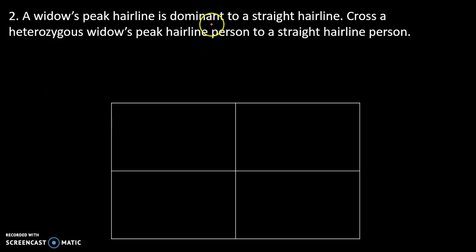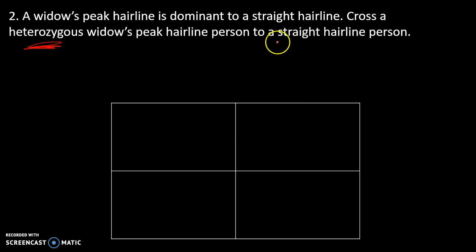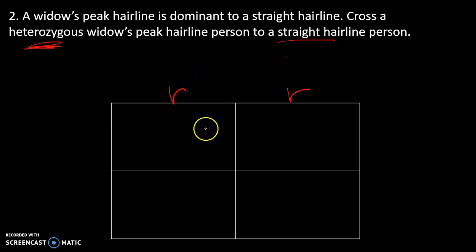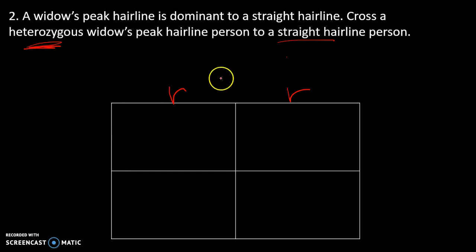Number two: a widow's peak hairline is dominant to a straight hairline. Cross a heterozygous person with a straight hairline individual. If it's straight hairline, we can assume it's recessive, and if it's recessive we can assume it's homozygous recessive, because when assuming complete dominance, the only way that recessive trait shows up is if both alleles are recessive.